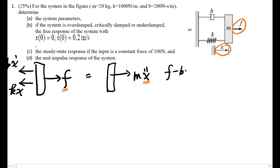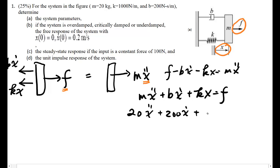F minus Bx dot minus Kx equals Mx double dot. In other words, Mx double dot plus Bx dot plus Kx equals F. To make a standard form, let's put the numbers in first. Compare to a standard form.